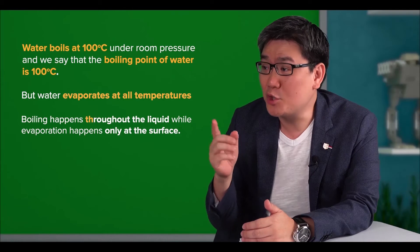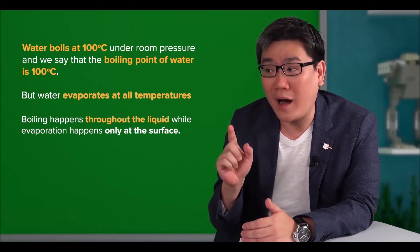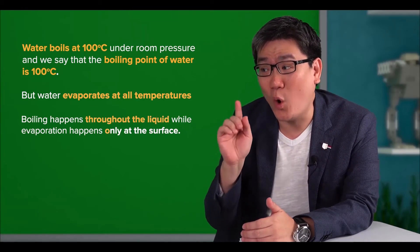Boiling happens throughout the liquid, while evaporation happens only at the surface. When water is boiling, you will see bubbles forming at the area of contact between the water and the energy source. You don't see this during evaporation. So, only when you see lots of bubbles can you conclude that the water is boiling, and the temperature at which the water boils is the boiling point.